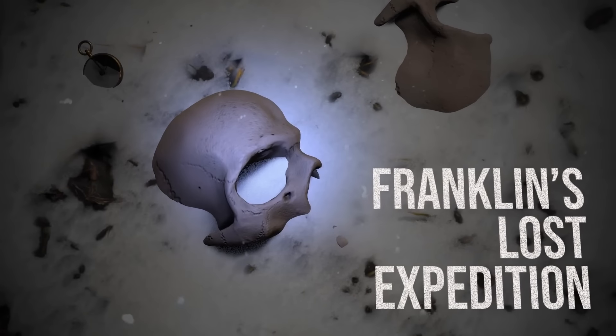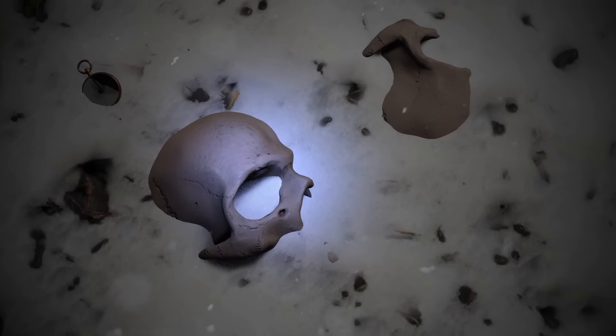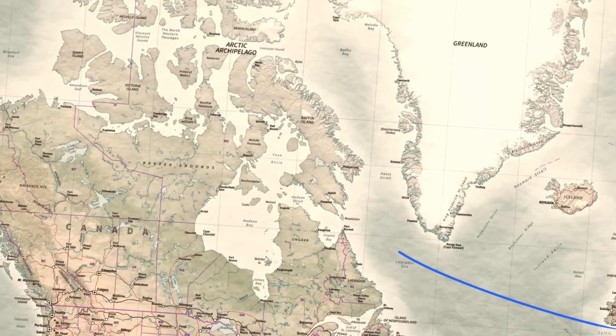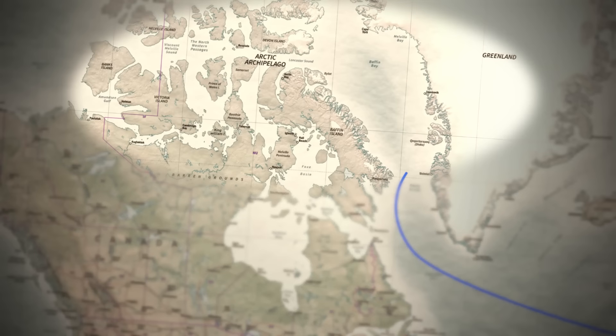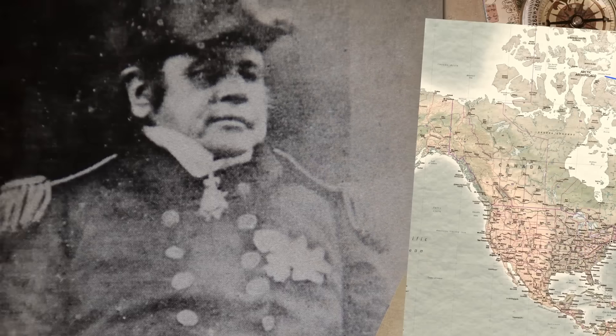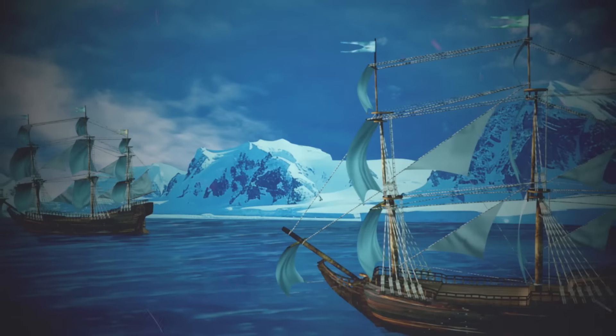So, what really happened to the crews of the Terror and Erebus? In May 1845, HMS Erebus and HMS Terror left Britain for Nunavut, Northern Canada. There was great hope that they would finally chart the Northwest Passage. John Franklin, who had already made two attempts, was eager to succeed. By the standards of the time, the Erebus and Terror were advanced ships. They had heating systems and vast supplies of preserved foods.